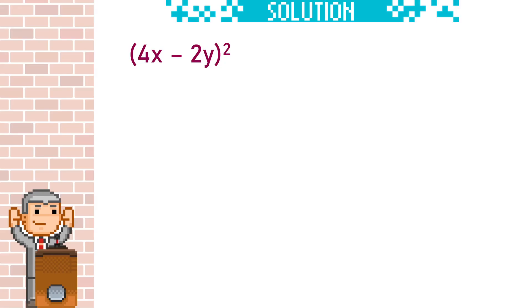When we're asked to expand a bracket that's squared, we need to write that bracket twice, because square just means itself times itself.